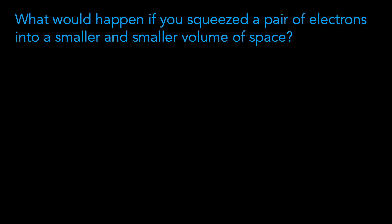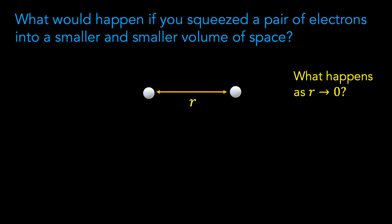Electrons are the negatively charged fundamental particles that we find whizzing around inside every atom. What happens if you try to squeeze two electrons closer and closer together? To answer this question, let us consider two electrons separated by some distance r. Now what are the forces acting on these two electrons? Well, firstly we know that because the two electrons have mass, there will be a gravitational force of attraction between them trying to pull them closer together.